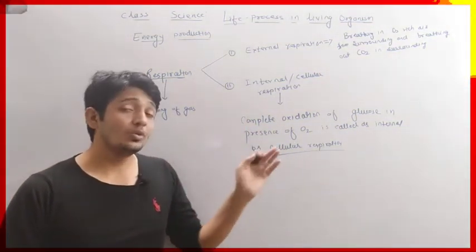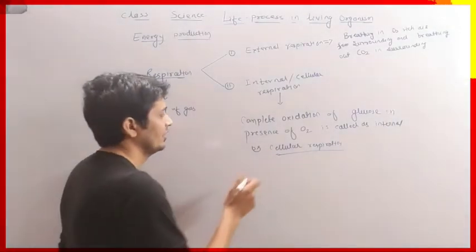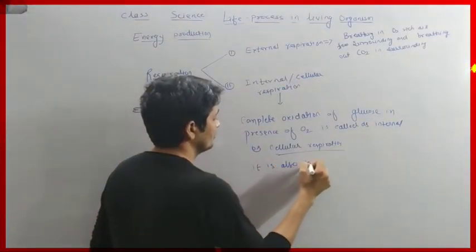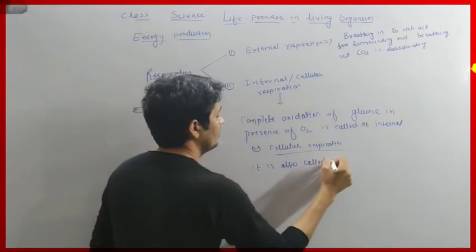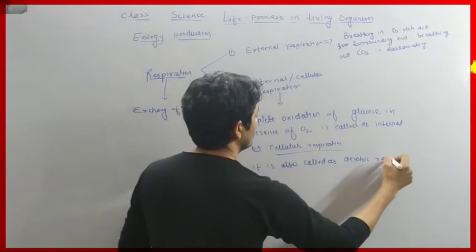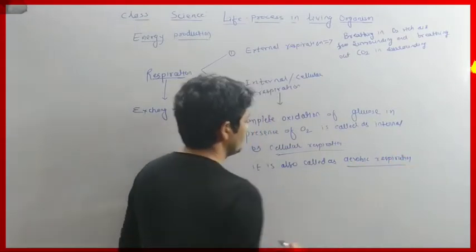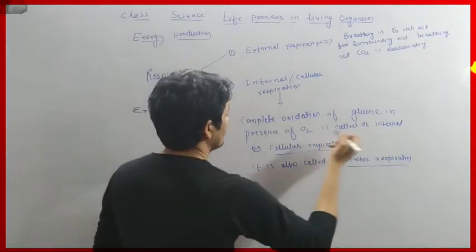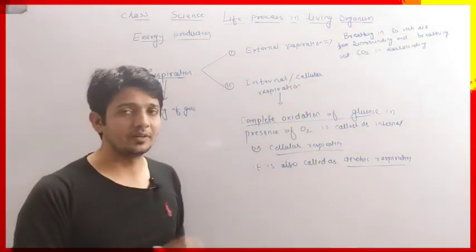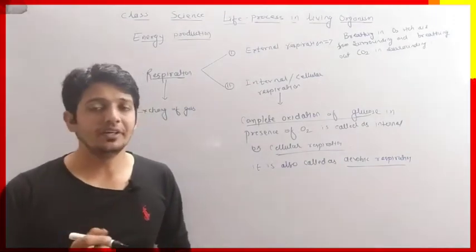When oxidation of glucose takes place in the presence of oxygen gas, it is called aerobic respiration. In aerobic respiration, complete oxidation of glucose takes place — that you have to remember. Now we will understand aerobic respiration in detail.